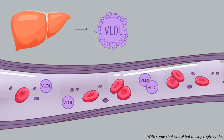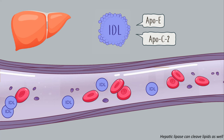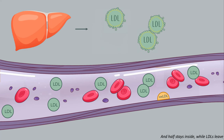Hepatocytes release the LDL to the blood — some cholesterol but mostly triglycerides. HDL's receptors borrowed again, they help tissues take what they want from them. When stripped of fatty acids they become IDL. Hepatic lipase can cleave lipids as well. So entering the liver, ApoE is the key. In half stays inside, while LDLs leave.